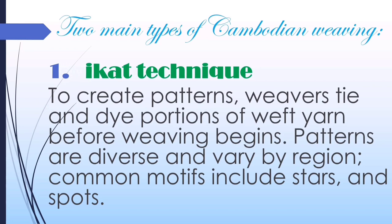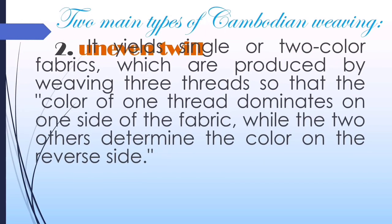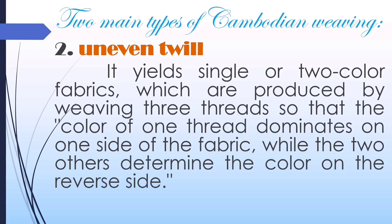In the Ikat technique, weavers tie and dye portions of the weft yarn before weaving begins. Patterns are diverse and vary by region; common motifs include stars and spots. The uneven twill yields single or two-colored fabrics produced by weaving three threads so that the color of one thread dominates on one side, while the two others determine the color on the reverse side.